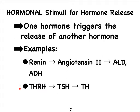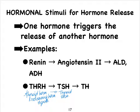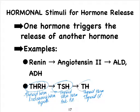The hypothalamus releases a hormone called thyroid hormone releasing hormone. When released by the hypothalamus, that hormone is then going to be able to stimulate the release of thyroid stimulating hormone from our anterior pituitary. The TSH secreted by the anterior pituitary will then trigger the release of thyroid hormone by the thyroid gland. There will be many examples like this where a hormone triggers the release of another hormone, and that hormone can trigger the release of yet another hormone.